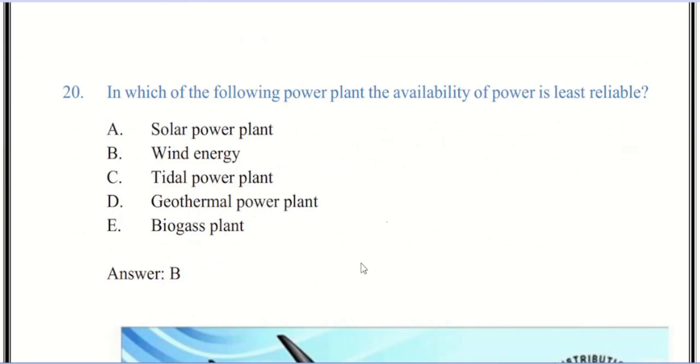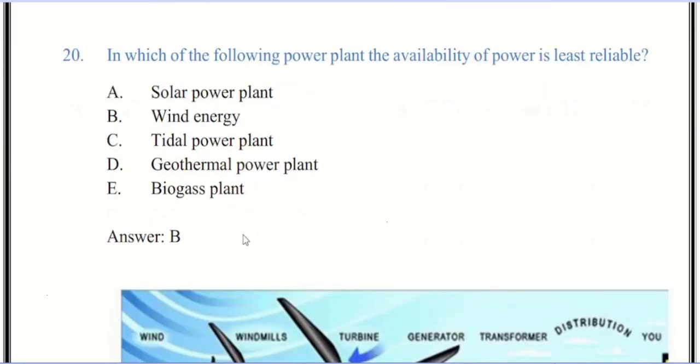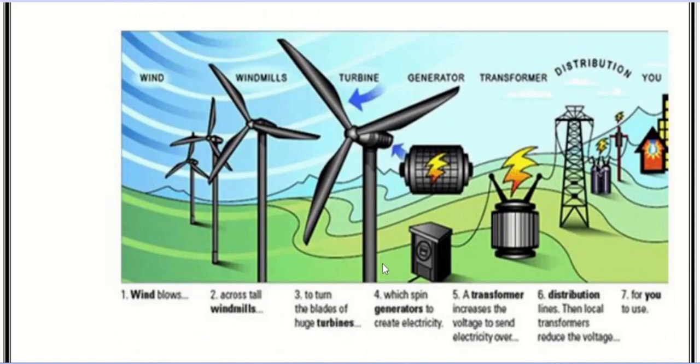Now we come to question number 23. In which of the following power plants is the availability of power least reliable? The correct answer is B, wind energy. You can see from the figure the whole process of wind power. While nuclear power plant is the most certain source of power generation, a wind farm is the least reliable. Wind fluctuation can be a serious problem resulting in reduced efficiency of turbines. Wind energy requires an adequate supply of wind. Since wind is not constant in all places all the time, it makes wind energy the least reliable source of energy.